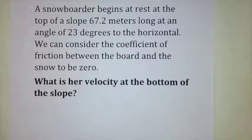In this video, I want to demonstrate how we can use a new technique to solve a familiar problem. The problem is that a snowboarder begins at rest at the top of a slope 67.2 meters long at an angle of 23 degrees to the horizontal. We can consider the coefficient of friction between the board and the snow to be 0 in this initial example. And the question is, what is her velocity at the bottom of the slope?